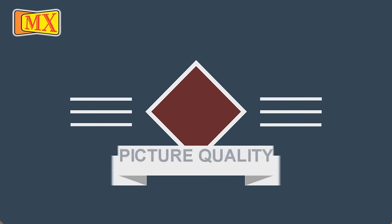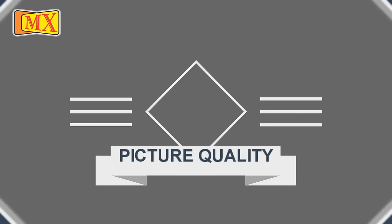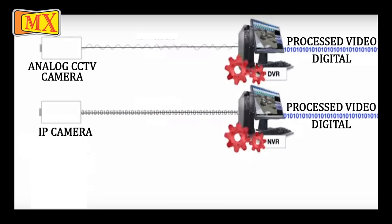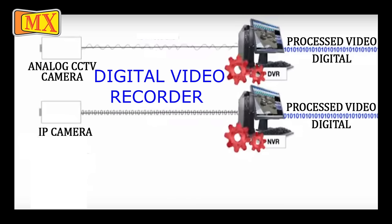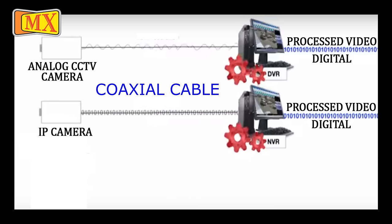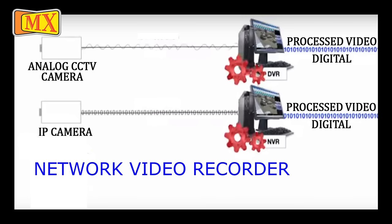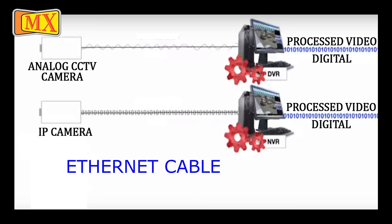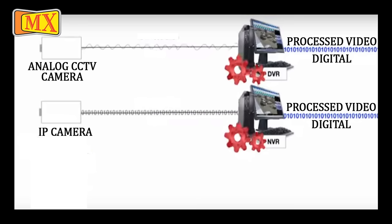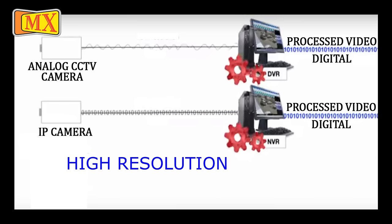Let's see some of the major differences between these cameras, starting with picture quality. Analog CCTV cameras are connected to a DVR — which stands for Digital Video Recorder — using coaxial cable, which converts the analog signal to a digital signal. These cameras give low resolution images. On the other hand, IP cameras are connected to a NVR — which stands for Network Video Recorder — using ethernet cable. IP cameras transmit digital signal and give high resolution images.